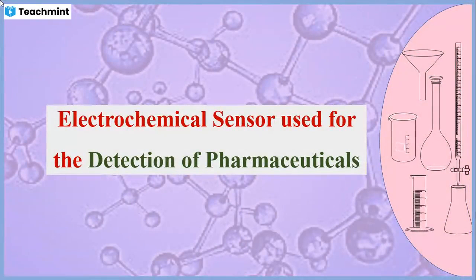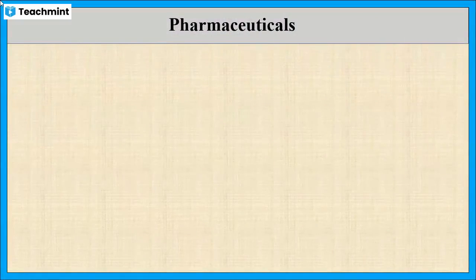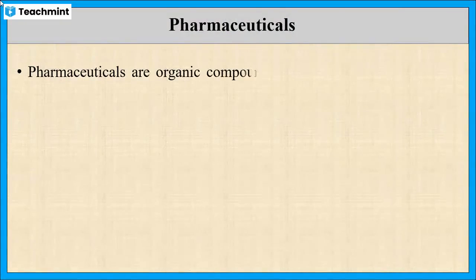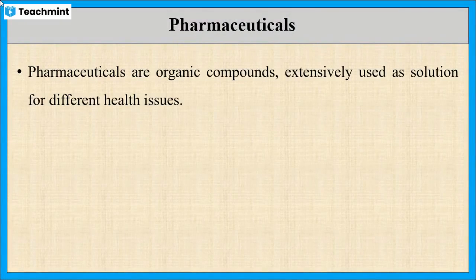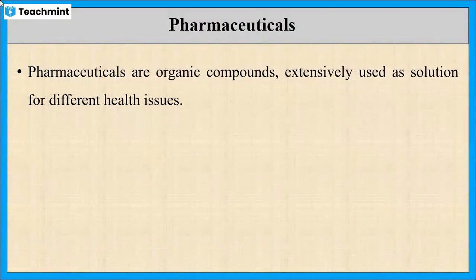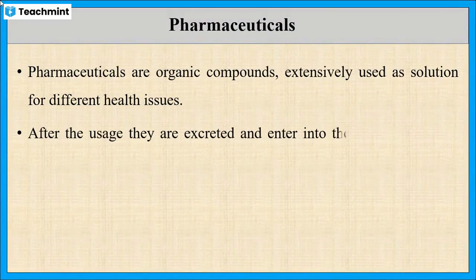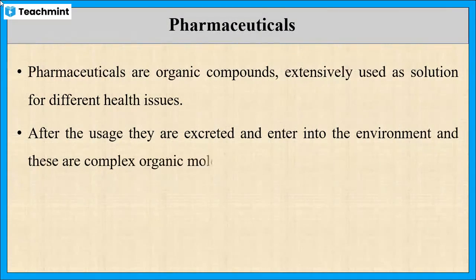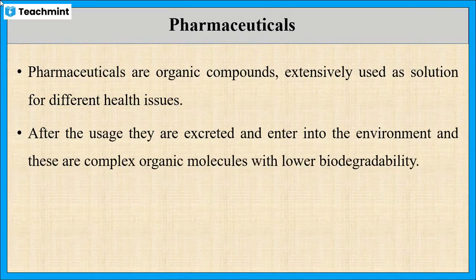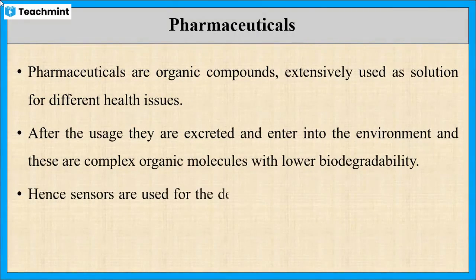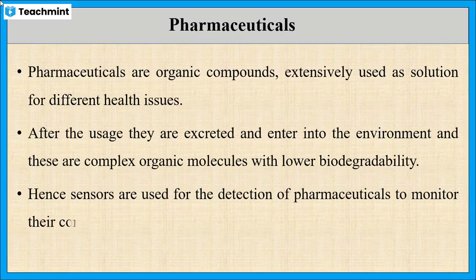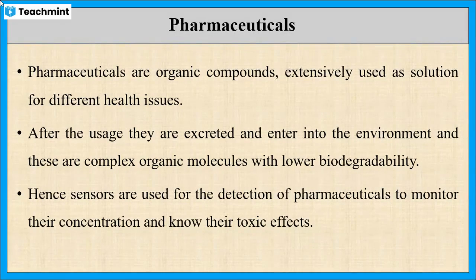In this session, let us discuss electrochemical sensors used for the detection of pharmaceuticals. Pharmaceuticals are organic molecules which are widely used to solve different health issues. After usage, they are excreted and enter into the environment. As these molecules have low biodegradability, they may cause toxic effects on the environment. Hence, monitoring of pharmaceuticals is important, and many sensors are used for this purpose.